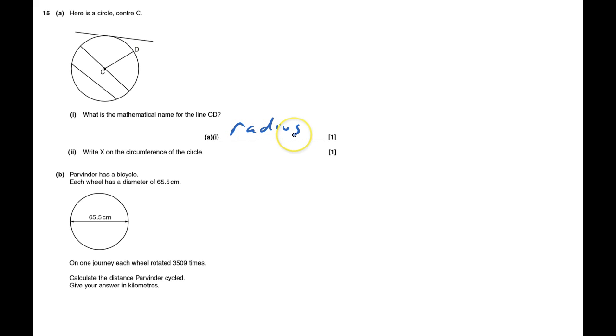Write X on the circumference of the circle. That is the bit which goes around, so I put X there.